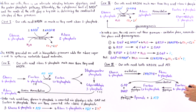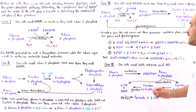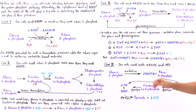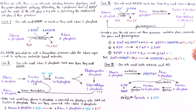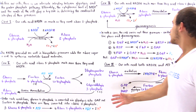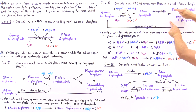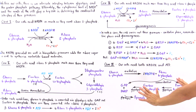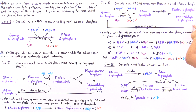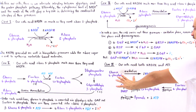Finally, let's move on to case 4. In case 4, our cells need not only NADPH molecules but also ATP energy molecules. Unlike case 3 where intermediates were recycled back into glucose-6-phosphate via gluconeogenesis, in case 4 those same intermediates will instead follow the glycolytic pathway to generate ATP.